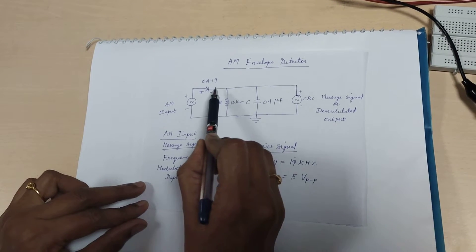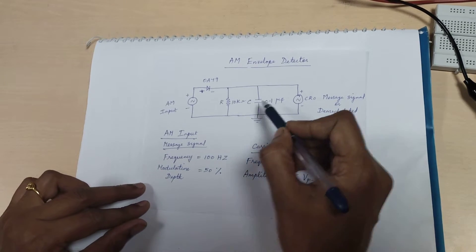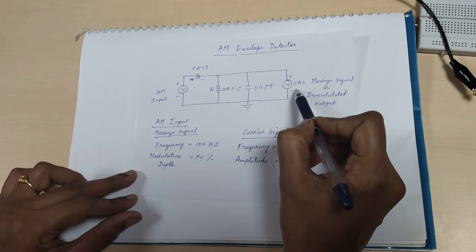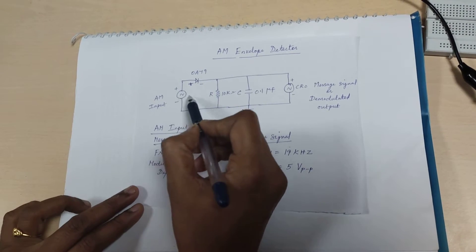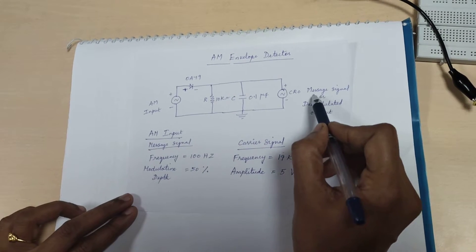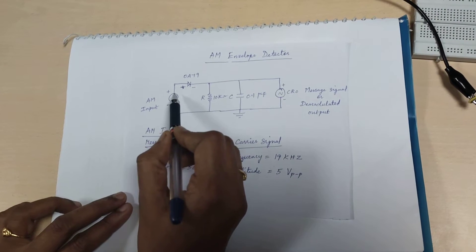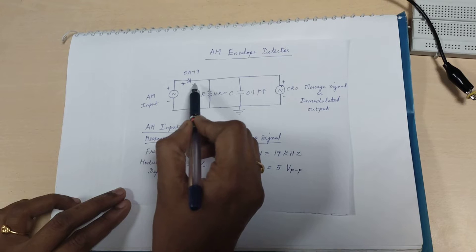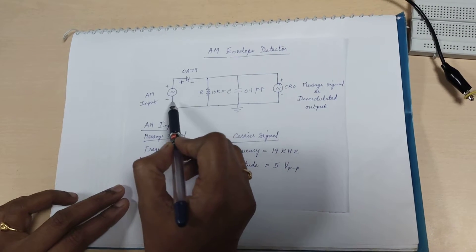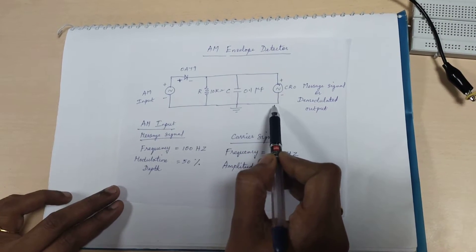During the positive cycle, the capacitor will be charged at every peak and will discharge through the resistor, so the output simply follows the positive cycle of the AM input. We get the demodulated message signal at the oscilloscope. In the negative half cycle, the diode is reverse biased and completely open, so it will not conduct. This is how the AM input is demodulated using an envelope detector circuit.